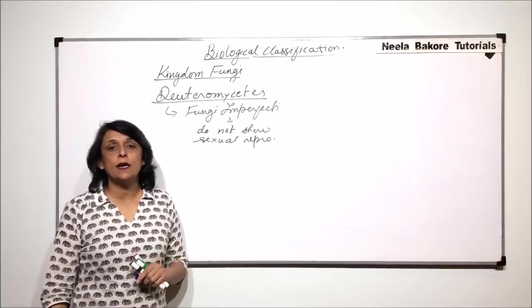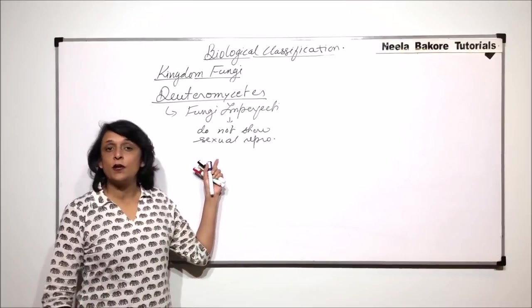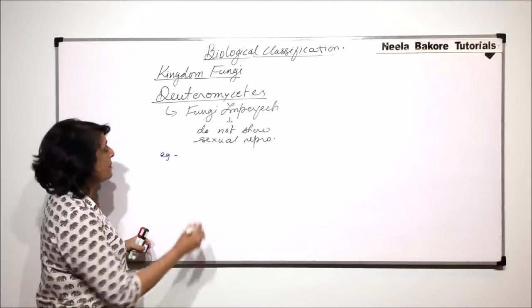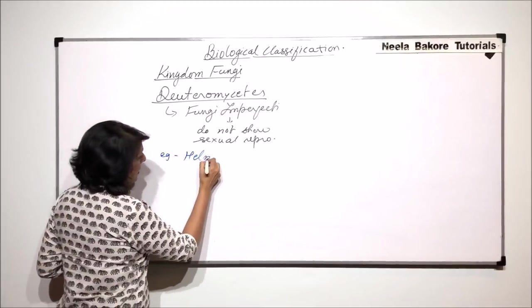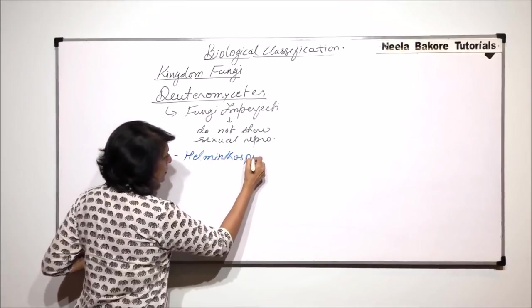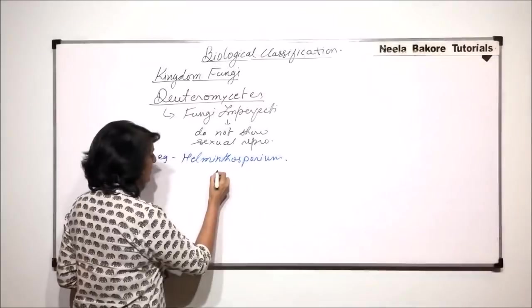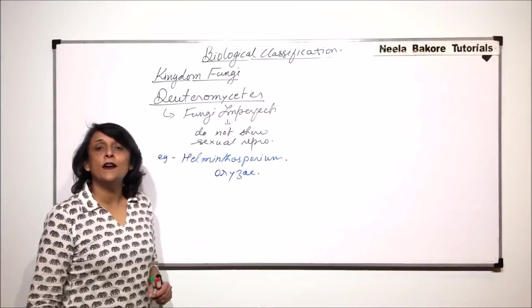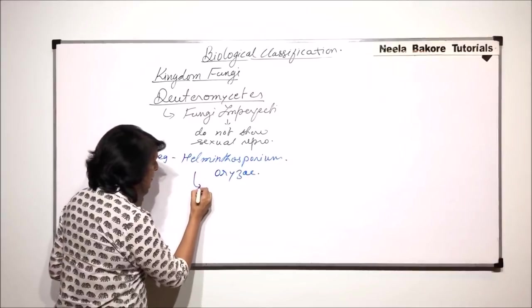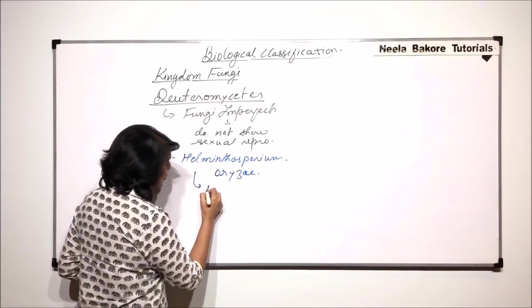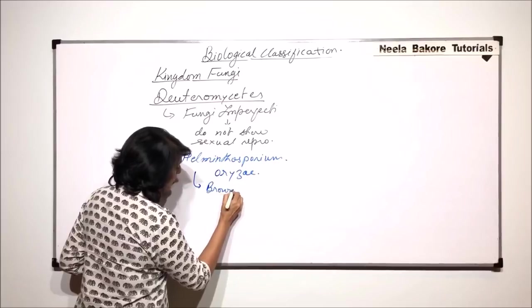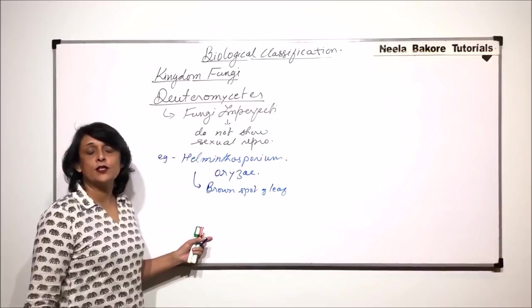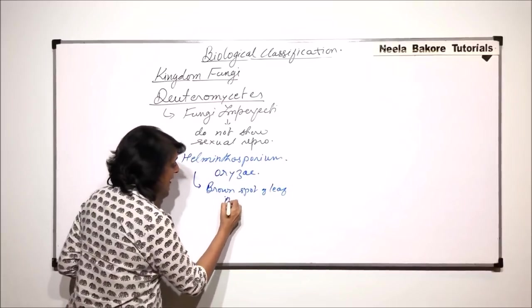There are a few very important examples that come under this particular group of Deuteromycetes. One important example is Helminthosporium oryze. This fungus is responsible for causing a disease called the brown spot of leaf, and this infection is very common in rice.